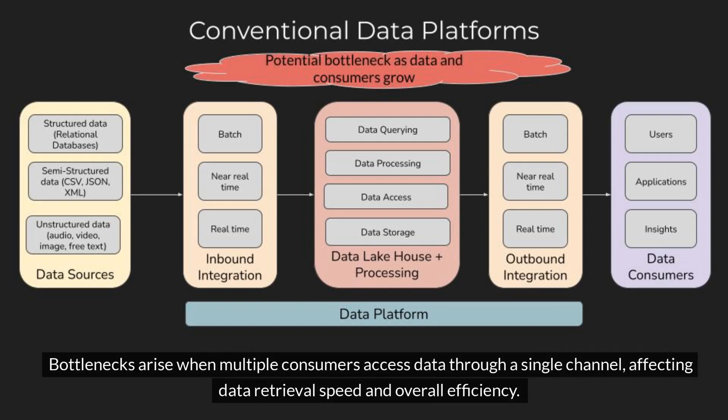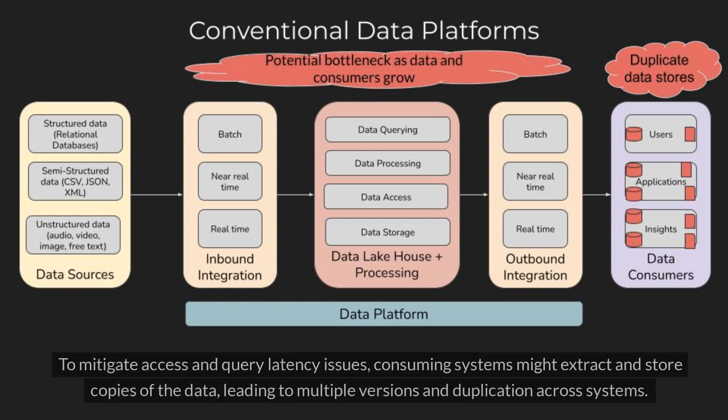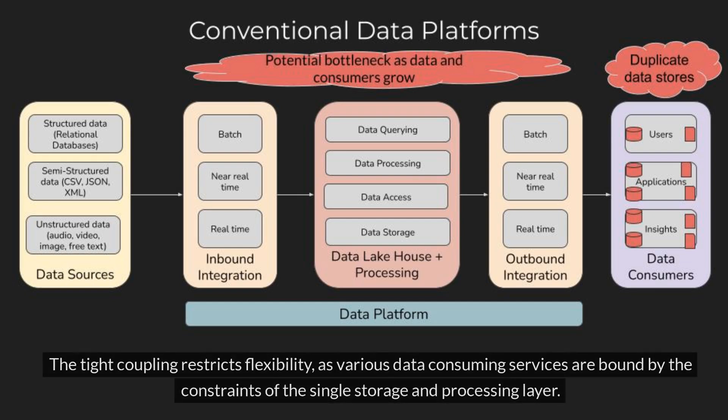Bottlenecks arise when multiple consumers access data through a single channel, affecting data retrieval speed and overall efficiency. To mitigate access and query latency issues, consuming systems might extract and store copies of the data, leading to multiple versions and duplication across systems. The tight coupling restricts flexibility, as various data consuming services are bound by the constraints of the single storage and processing layer.